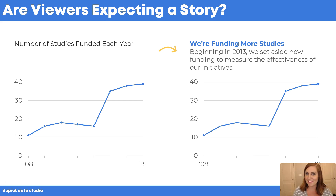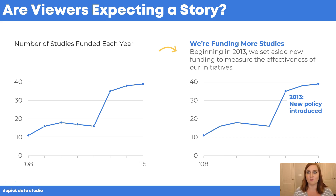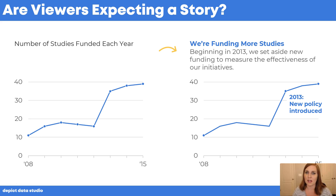Here's a final technique to make this one shine: an annotation. An annotation is just a fancy word for a text box — in PowerPoint or Word, go to Insert > Text Box, just like you've done before. Annotations are a great way to add milestones or historical context to graphs, like noting that in 2013 a new policy was introduced, which is probably what caused that line to sharply increase.